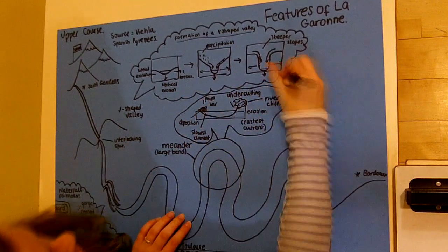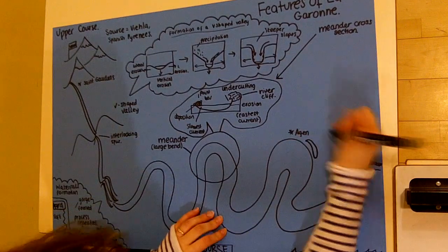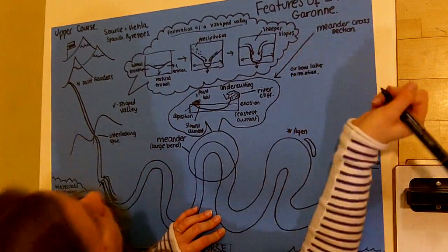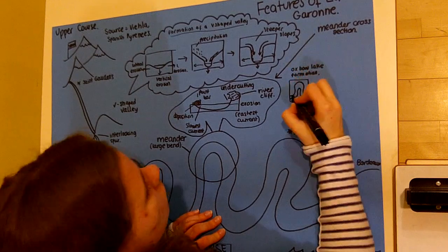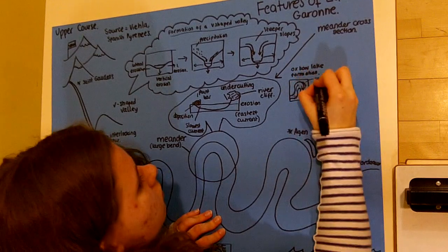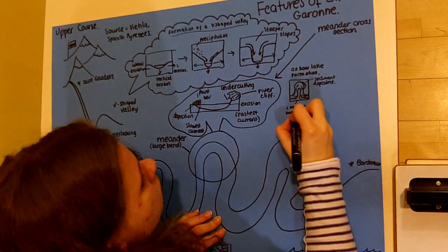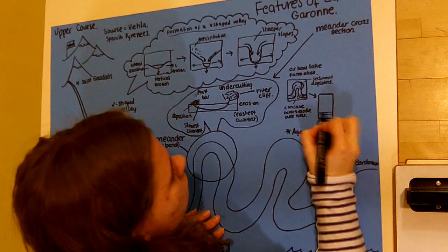Oxbow lakes share the same characteristics as meanders, but differ in the sense that continued erosion of the meander neck eventually causes the river to break through and follow a more direct route. Both components are heavily reliant upon the processes of erosion and deposition.